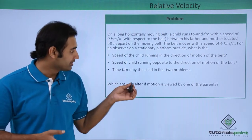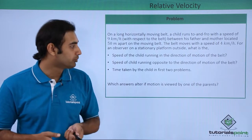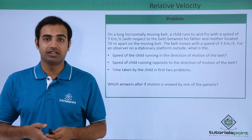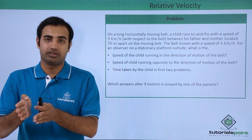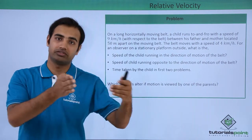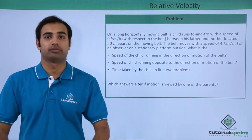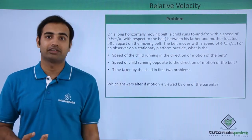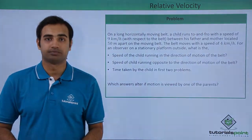We also need to determine which quantities change if the motion is viewed by one of the parents. We have to see that if we stop observing as a stationary ground observer and instead observe the child as parents standing on the belt, what quantities calculated in the above problems will change.